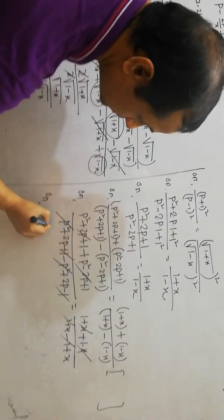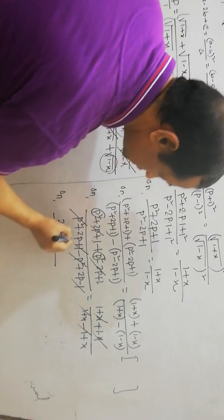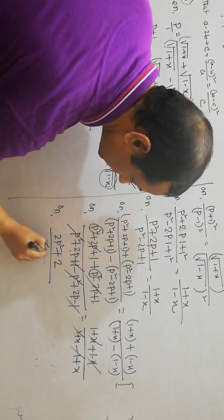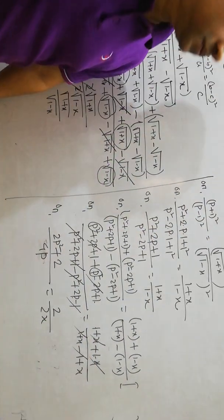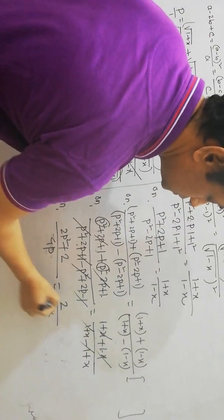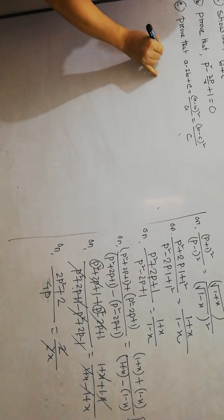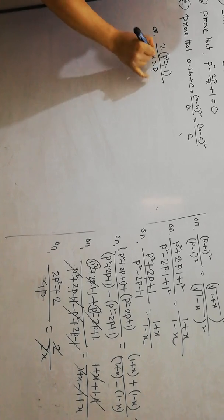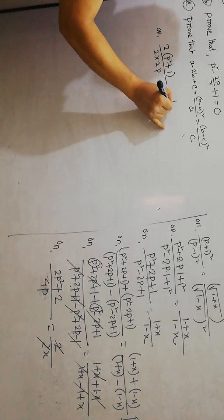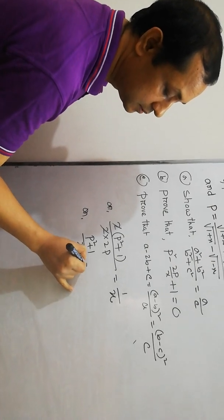Simplifying: left hand side numerator — p² and p² give 2p², and 1 and 1 give 2, so 2p² + 2; denominator — 2p + 2p gives 4p. Right hand side numerator — 1+1 gives 2; denominator — x + x gives 2x. So 2(p² + 1) by 4p equals 2 by 2x. Simplifying: p² + 1 by 2p equals 1 by x.